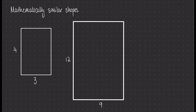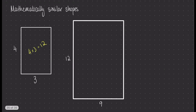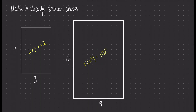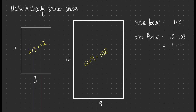Let's look at the area of these two shapes. We'll start by calculating the area of the left-hand shape: 4 times 3 is 12. Now the area of the larger shape: 12 times 9 is 108. It might not look like there's any relationship between the areas, but let's remind ourselves that our scale factor between the two shapes is 1 to 3. The area factor is simply a ratio of the areas, so we write 12 to 108. Simplifying by dividing both sides by 12, that ratio is equal to 1 to 9.